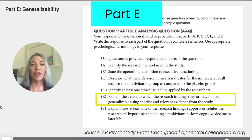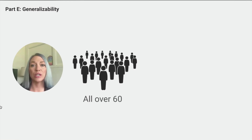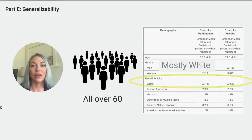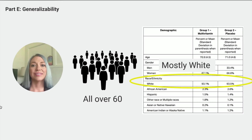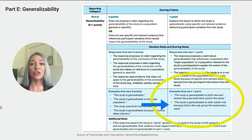Part E asks about the generalizability of the findings. The study's findings may not be fully generalizable because most participants were older adults of similar ethnic backgrounds. Always evaluate the sample's diversity when discussing generalizability. The best answer would be to say that the study is generalizable to older adults only, because that is the group the researchers used.